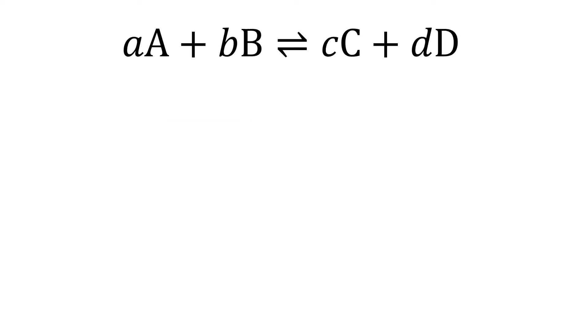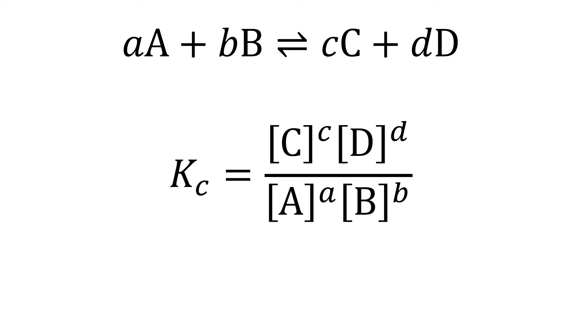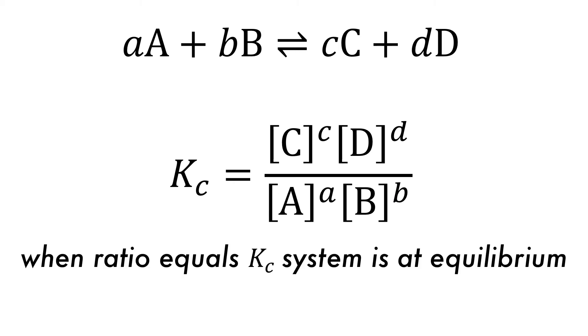Every equilibrium will have an equilibrium constant Kc, which will be the ratio of the products to the reactants at equilibrium. It is the ratio of the concentration of the products raised to the power of their stoichiometric coefficients over the concentration of the reactants raised to their stoichiometric coefficients. This is called the equilibrium constant expression, and if this ratio equals Kc, then the system is at equilibrium, otherwise it is not.